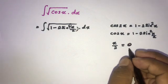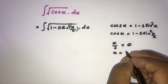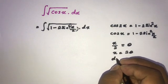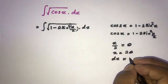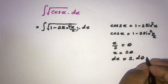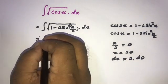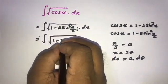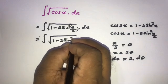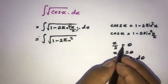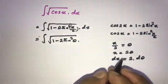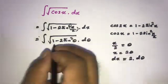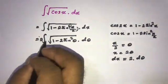Let x over 2 equal theta, so x equals 2 theta. Differentiating with respect to theta gives dx equals 2 d-theta. Substituting, we get the integral of the square root of 1 minus 2 sine squared of theta, times 2 d-theta, with the factor of 2 pulled outside the integral sign.